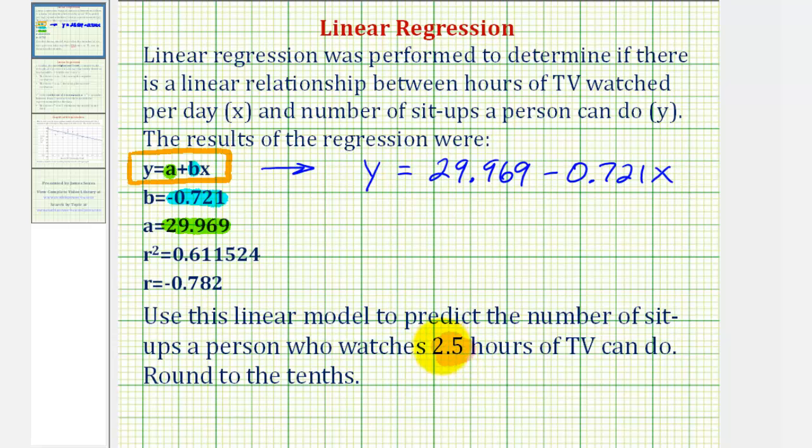So to make our prediction, we'll substitute 2.5 for x and determine y. So we'd have y equals 29.969 minus 0.721 times 2.5.